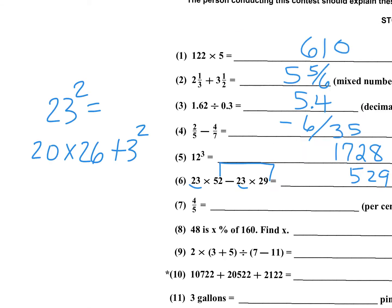For further explanation: if you don't have 23 squared memorized, subtract 3 to get 20 and add 3 to get 26. Then multiply 20 times 26 to get 520, plus 3 squared (which is 9), giving 529. This method works for any number being squared — prime factorization then add 1 to exponents and multiply.